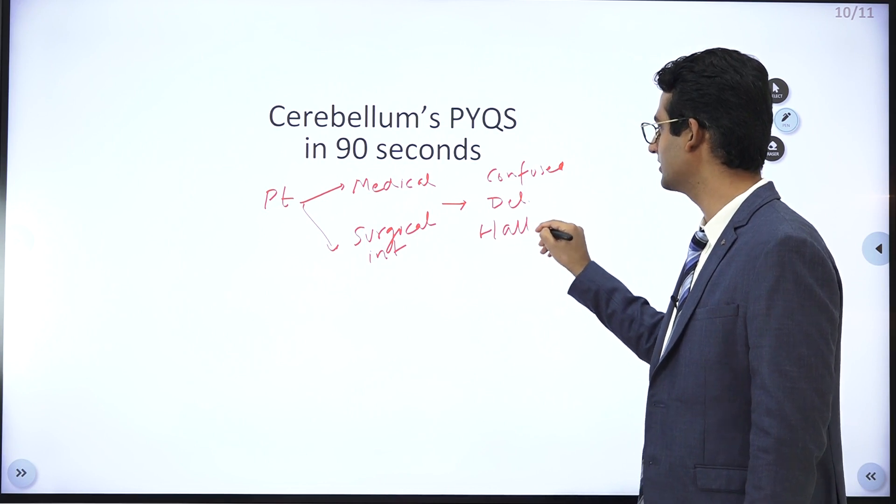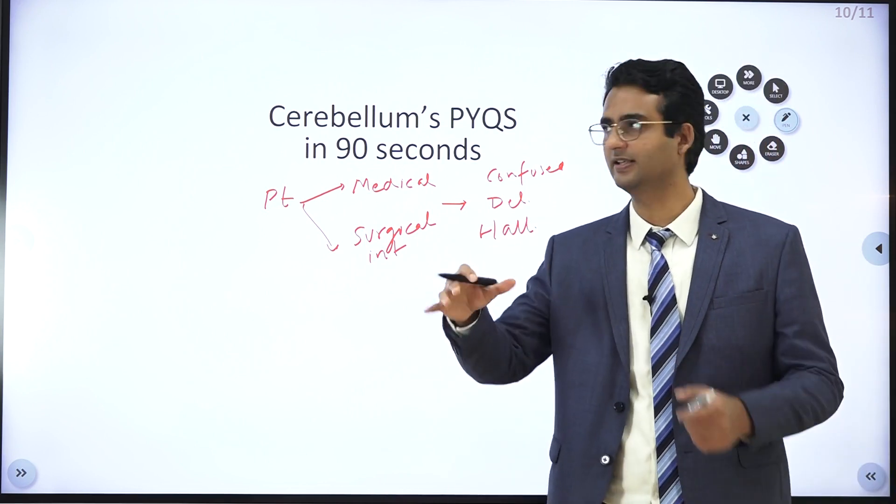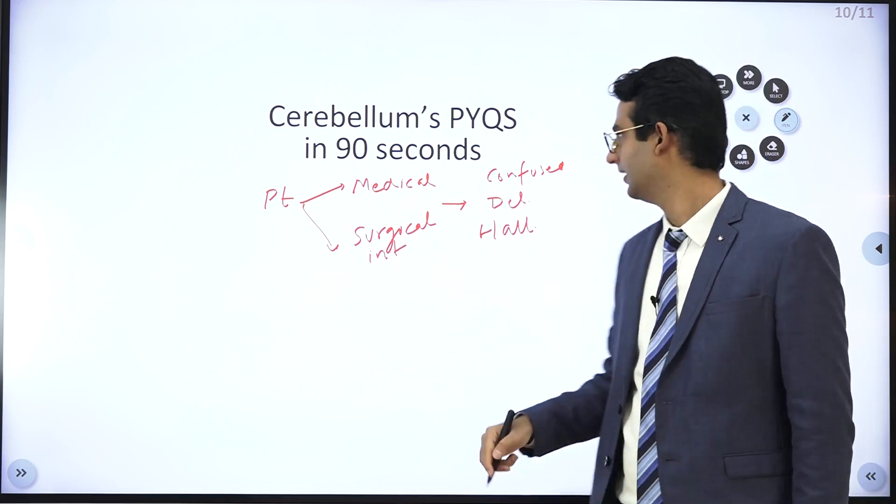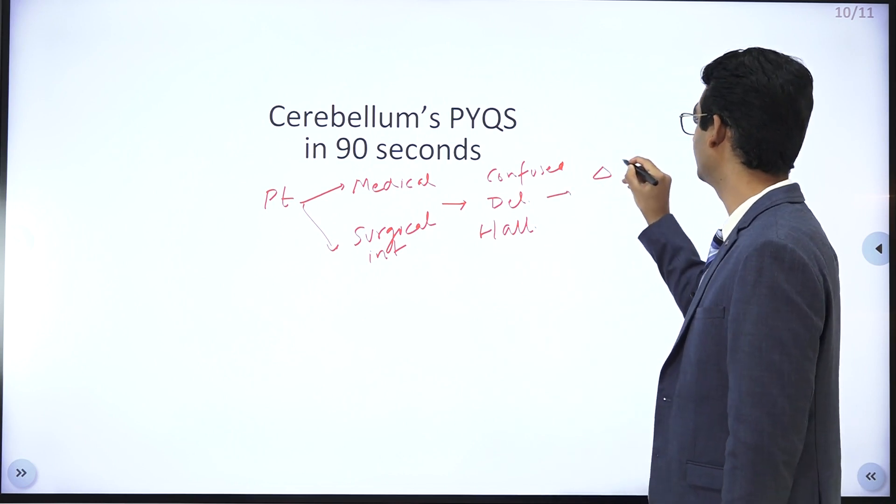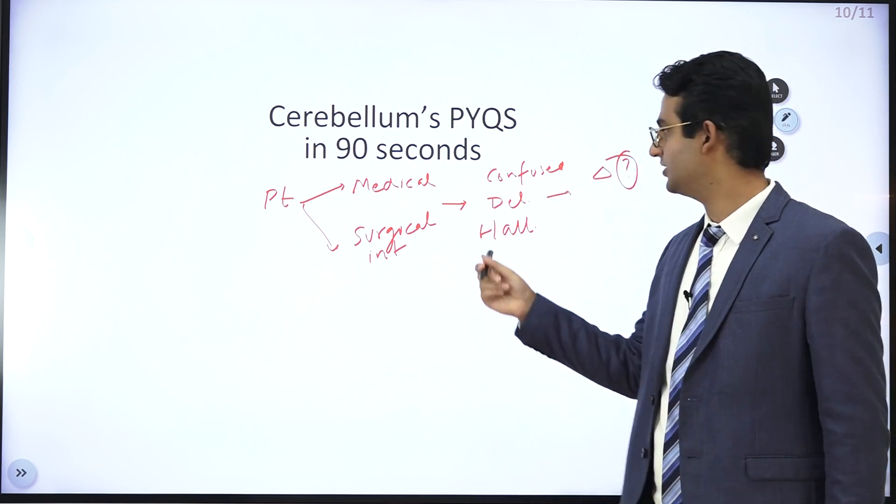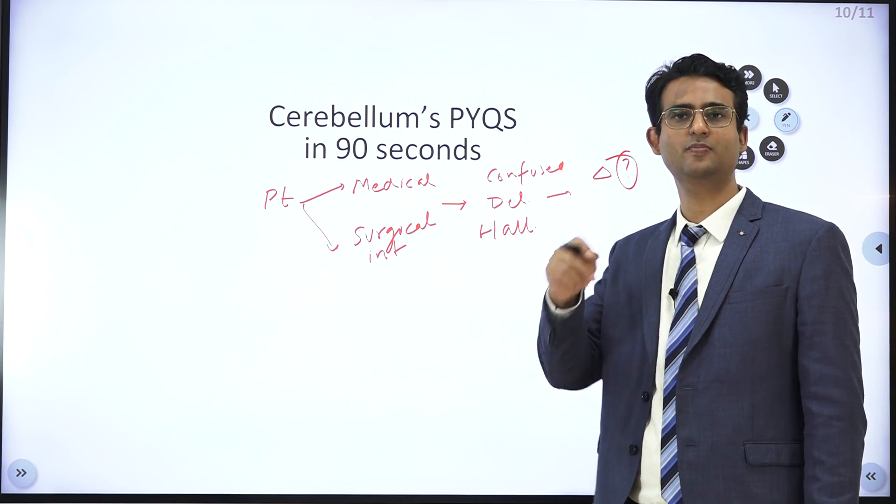Then they may give history of hallucinations - they may say that the patient is saying that there are small animals around. And then they ask you the diagnosis. Now when you look at the history of delusions and hallucinations, you make the diagnosis of schizophrenia or acute psychosis, which is wrong.